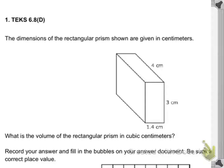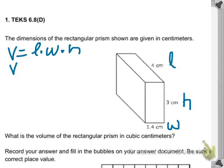Students should be labeling length, width, and height. Then they need to write the formula: length times width times height. They have all the dimensions and need to substitute those values into the formula. The length is four centimeters, the height is three centimeters, and the width is 1.4 centimeters.